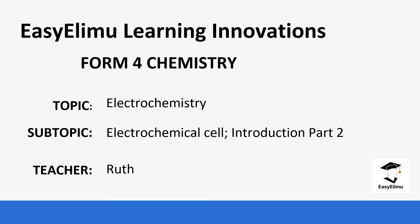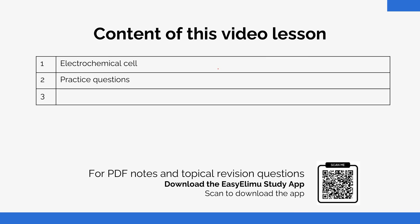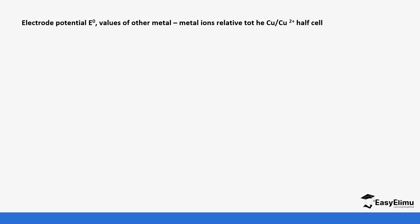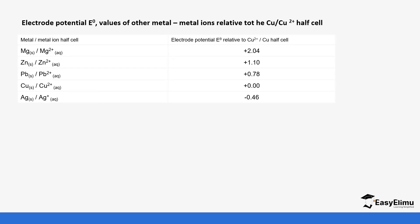Welcome to EZLM Learning Simplified. My name is Ruth and the topic for today is electrochemistry. We are still looking at the electrochemical cell — this is the second part. We are going to see different cells in regards to electrode potential, specifically the electrode potential of other cells relative to the copper-copper ion half cell, which is our reference electrode. This table is just in reference to copper; we will have another table later referenced to the standard electrode.